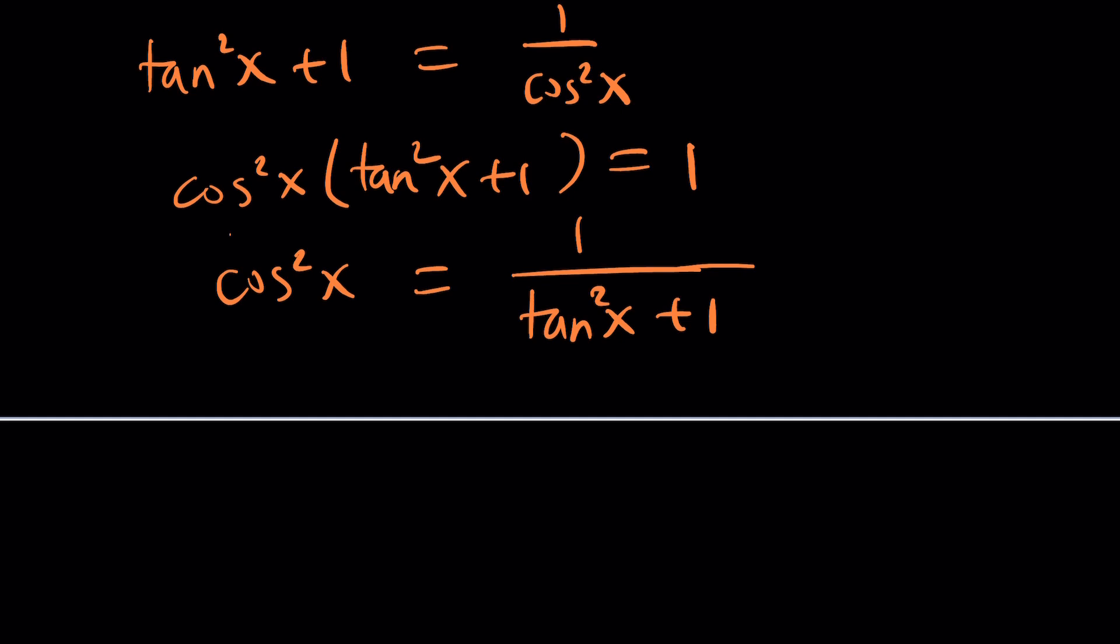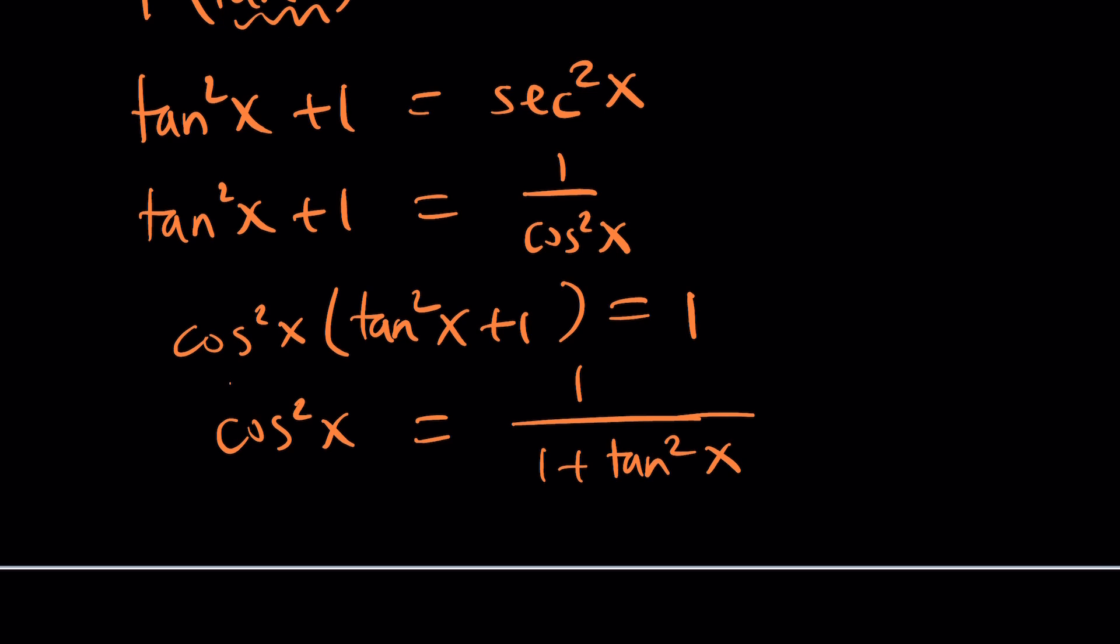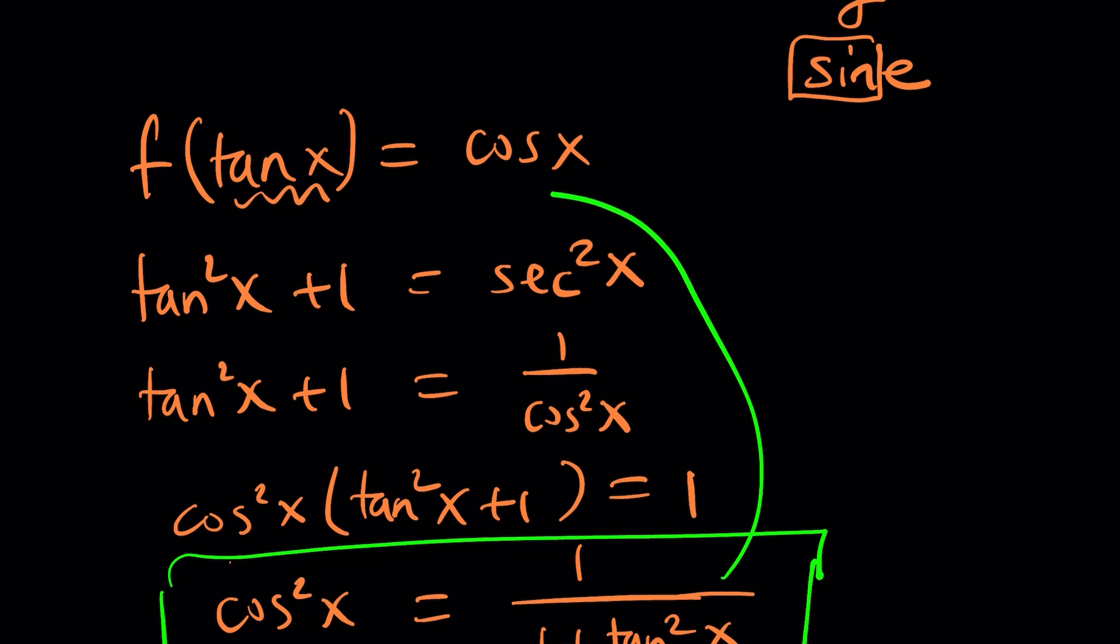Now, I keep saying I want to write it as 1 plus. Let me do it. So I'm going to write it as 1 plus tangent squared, which is more common. Now, how do I use this information? Well, I still need to be able to do the following. This is cosine squared. If I can turn it into cosine, then I can go ahead and use it here.